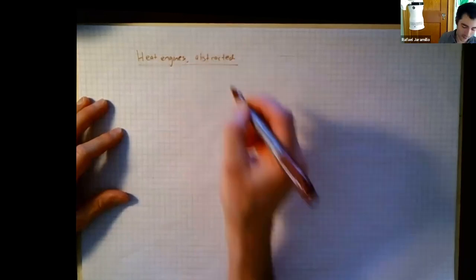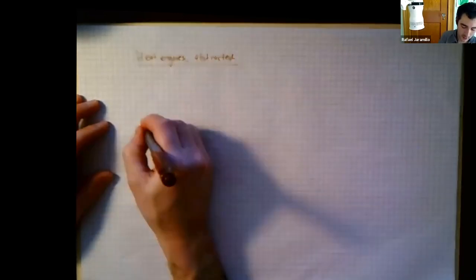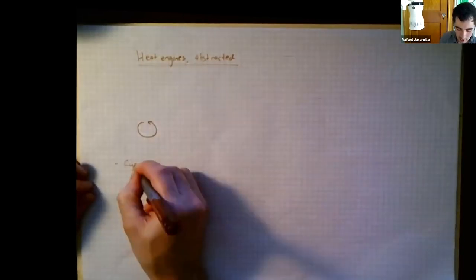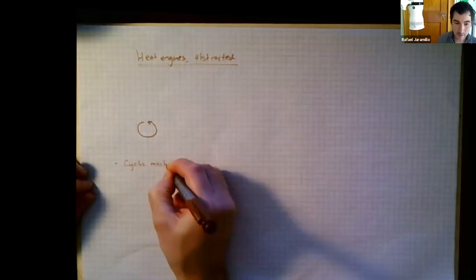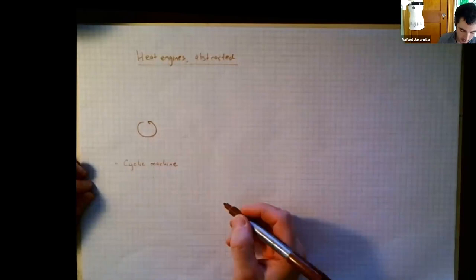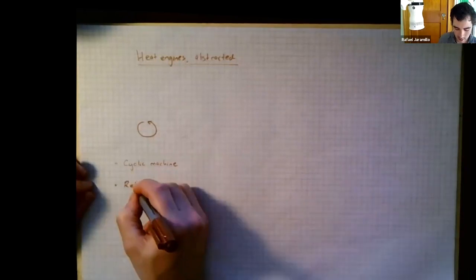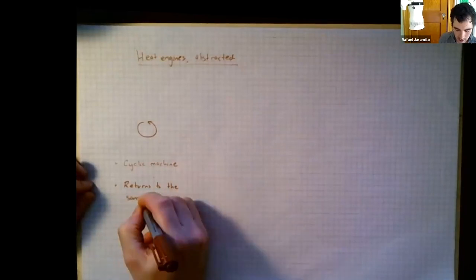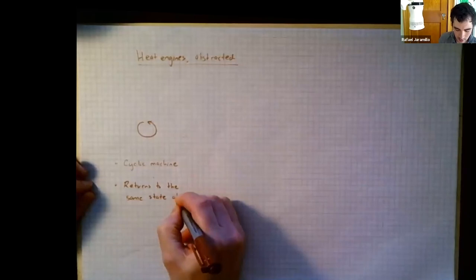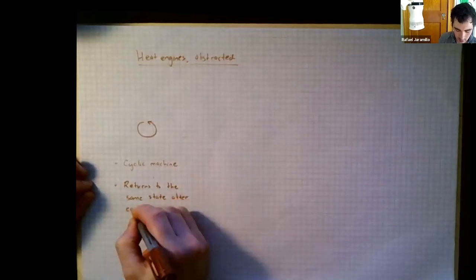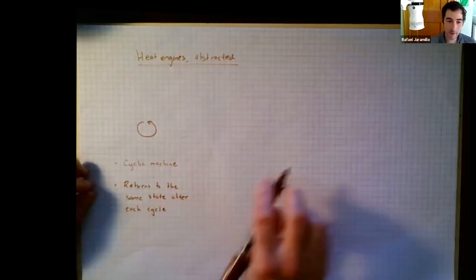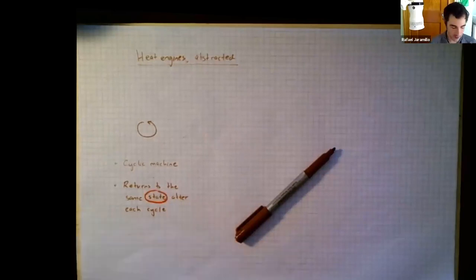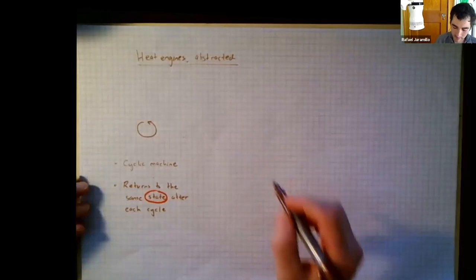This is the way that heat engines are represented in a textbook or in a class like this. You have some cyclic machine — normally drawn as a circle with an arrow. A cyclic machine returns to the same state after each cycle. We already have some thermodynamic words there that we know: state functions are involved, and this machine returns to the same state after each cycle.